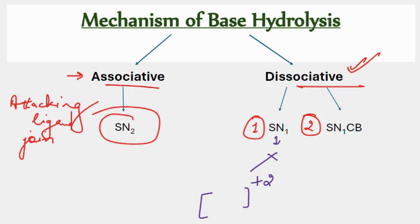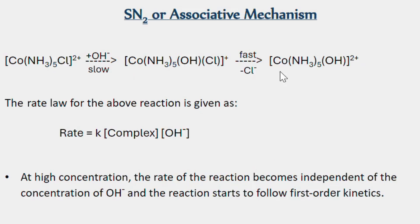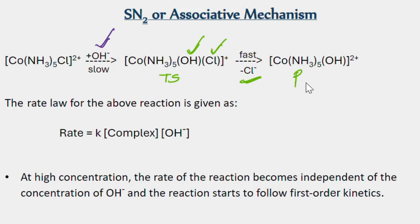We will study these two mechanisms in detail. In the SN2 mechanism, OH⁻ is our attacking group. OH⁻ attacks in the first step for base hydrolysis. In the SN2 mechanism, a transition state forms where both the leaving group (Cl⁻) and the attacking group (OH⁻) are present simultaneously. In the next step, the chloride ion is removed and our product forms. This is our SN2 mechanism.